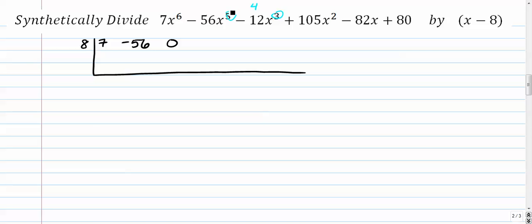Again, 5 and 3. 5 and 3 are not consecutive. 6, 5, 4, 3. There's a 4 missing right here. So I need to placehold that with a 0.